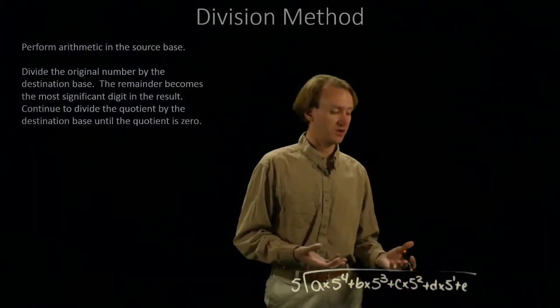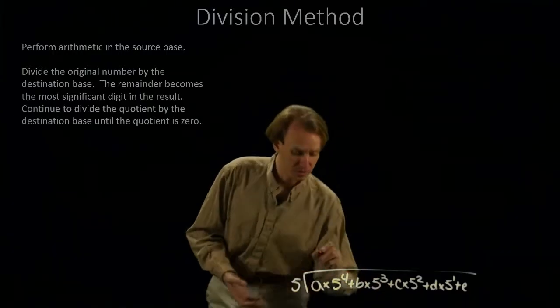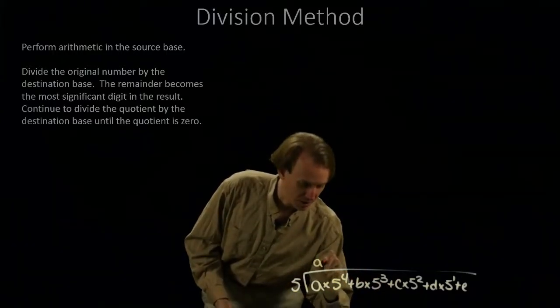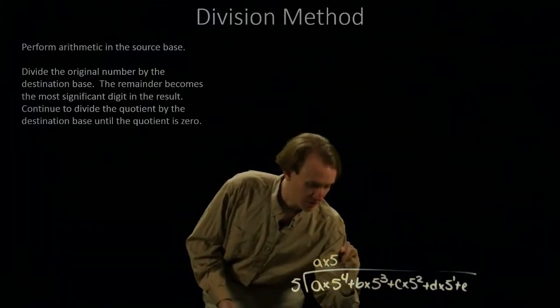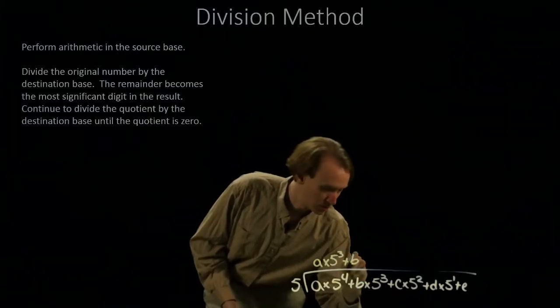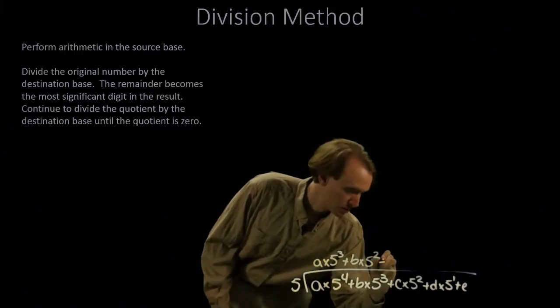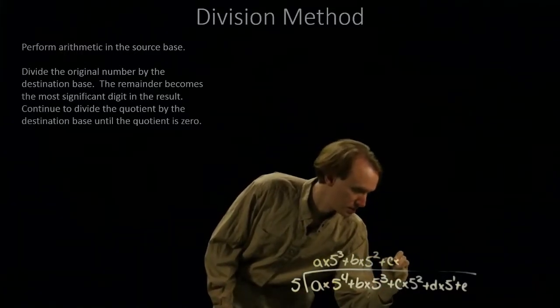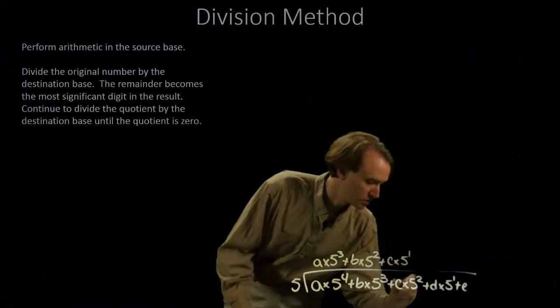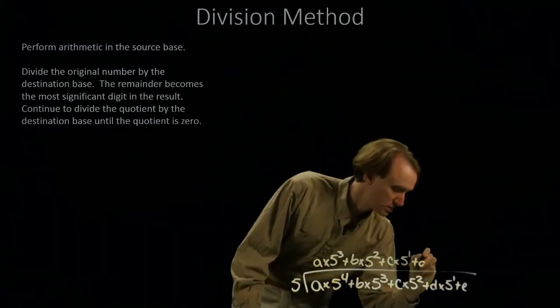It's something less than 5. So, when I do this division, I'll get a times 5 cubed plus b times 5 squared plus c times 5 to the 1st plus d.